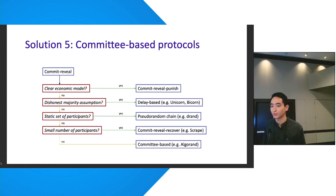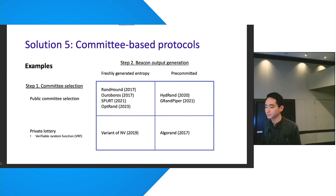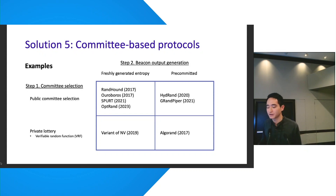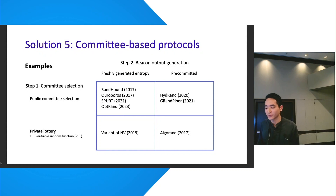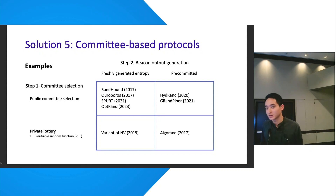To scale further, we can rely on committees — subsets or a leader for an epoch among DRB participants — as in a protocol called Algorand. Committee selection can be broken into two sub-steps: public committee selection followed by private lottery. Private lottery, staple to Algorand, relies on verifiable random functions (VRFs) and made the idea of cryptographic sortition popular. For generating the beacon output, we can use either freshly generated entropy or pre-committed entropy contributing to the final output.